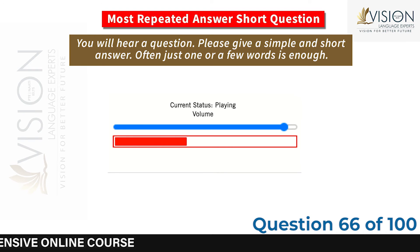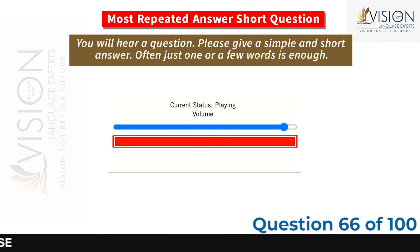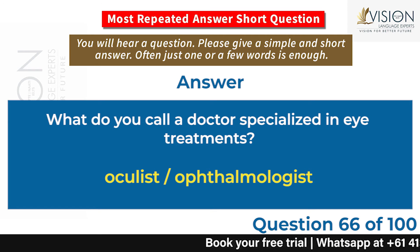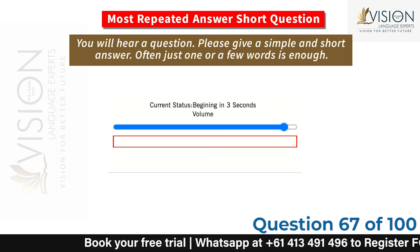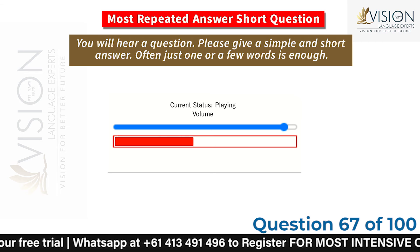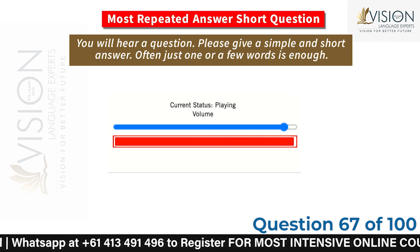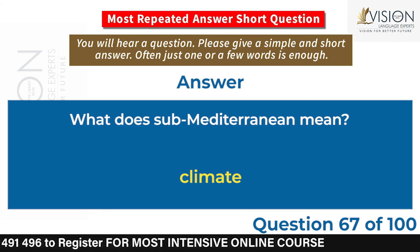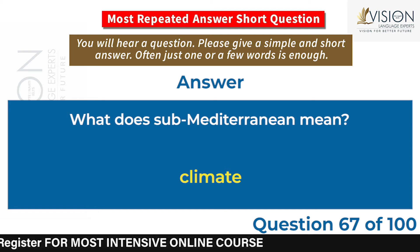What do you call a doctor specialized in eye treatments? Ophthalmologist. What does sub-Mediterranean mean? Climate.